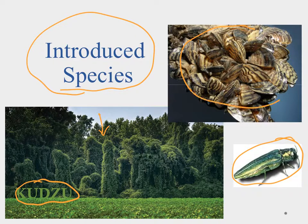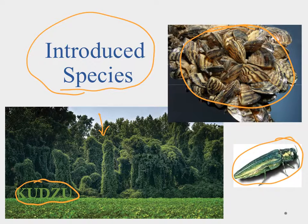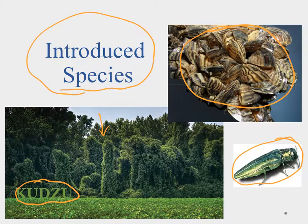Finally, we have the zebra mussel. The zebra mussel came in inadvertently — it wasn't like somebody said we should have mussels here. Instead, it came in in the ballast tanks of ships, and when they flushed out the ballast tanks, they flushed out these zebra mussels. Because there's nothing that feeds on them, they were able to explode in population. So when you introduce a species, you might not think anything of it at the time, but because it's not held in check, that population has the chance to bloom and go crazy.